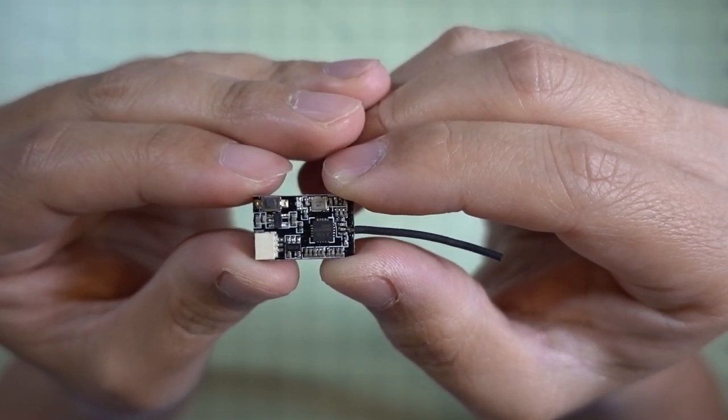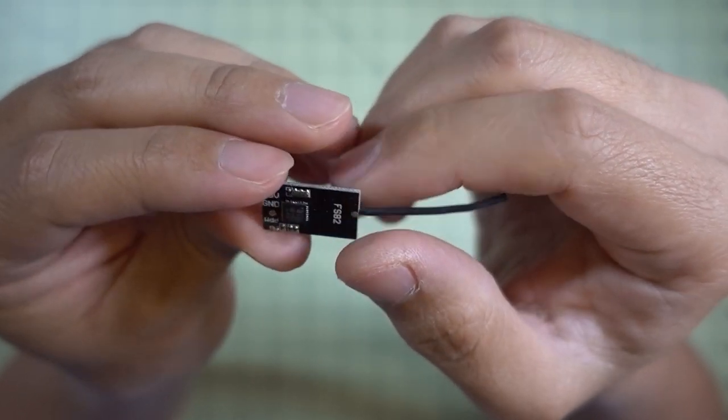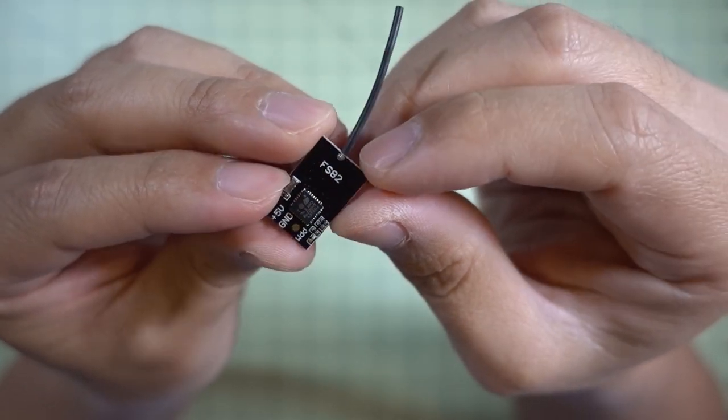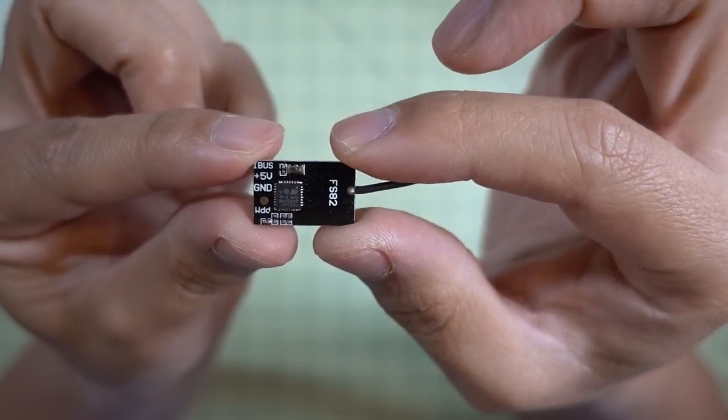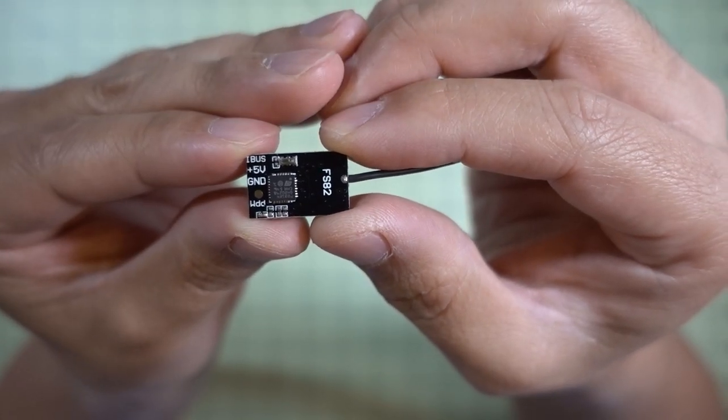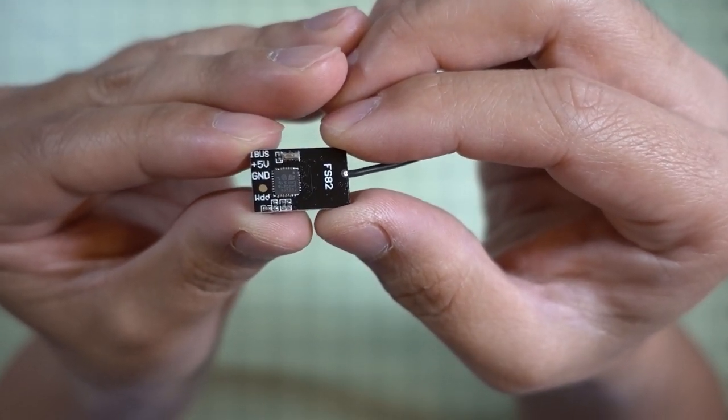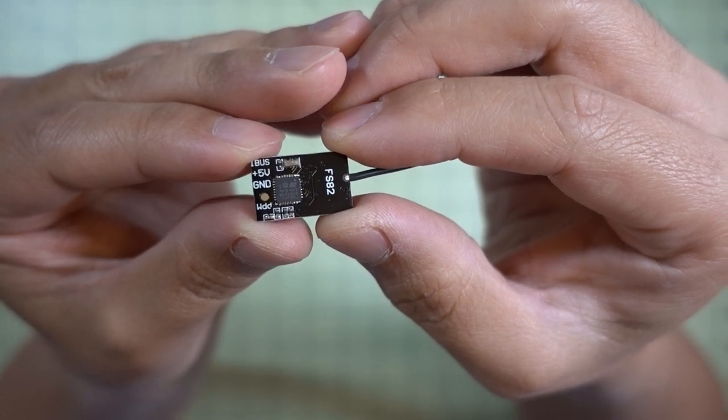Hey guys, in this video I'm going to talk about this new Flysky micro receiver I just received. It's called the FS82 and it's a bit confusing on Banggood because they sell it under two different SKUs and they sell for two different prices but they're actually the same receiver.